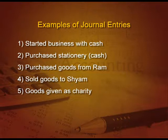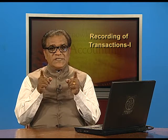Next example: Purchased furniture. We are purchasing an asset, not goods. So the asset is coming in and asset is debited. The entry is: Furniture account debit, To cash account. If nothing is mentioned regarding the mode of payment, it is always assumed to be cash. In the particulars column we write: Furniture account debit, To cash. 'To' is prefixed with the credit entry.